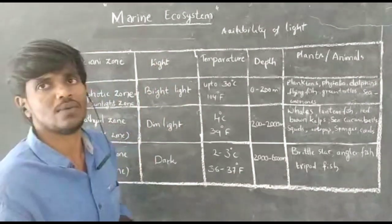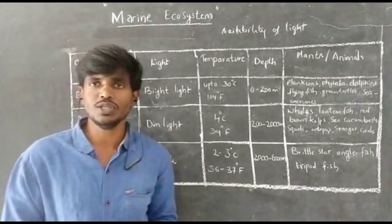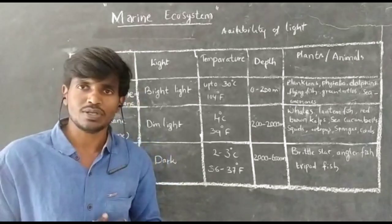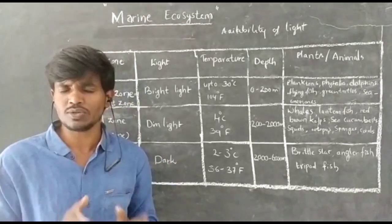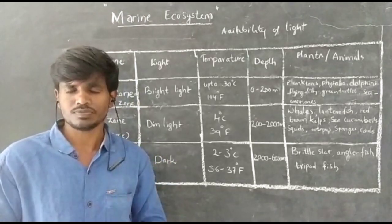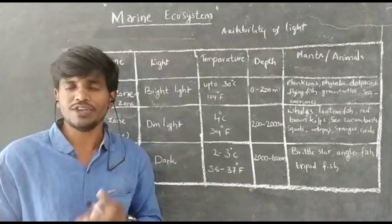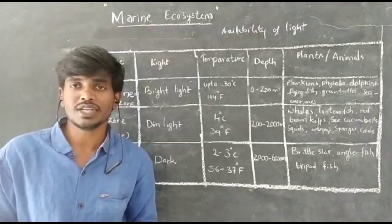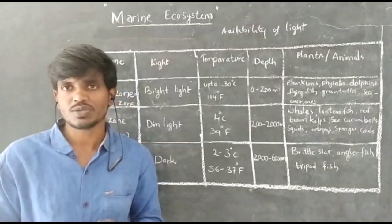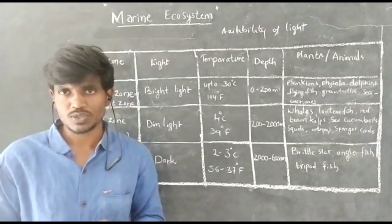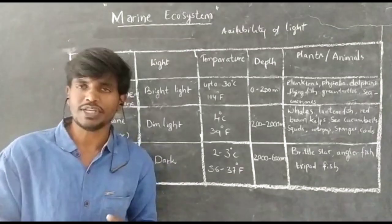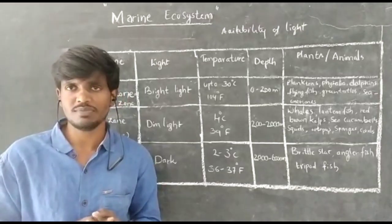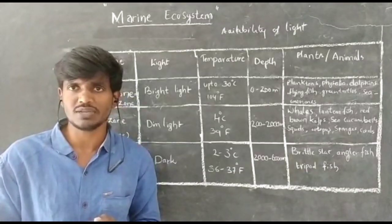These are the 3 zones based on the availability of sunlight. One interesting fact — the electric eel looks like a snake but it is not a snake. If any predator comes near to this electric eel, it can generate 600 volts of electricity, so that it can scare the predator and protect itself. It is a fish-like organism — it looks like a snake but it is not a snake.